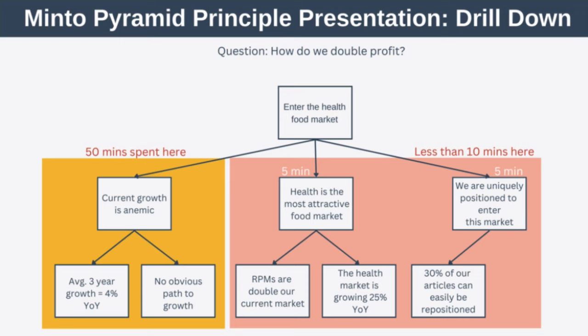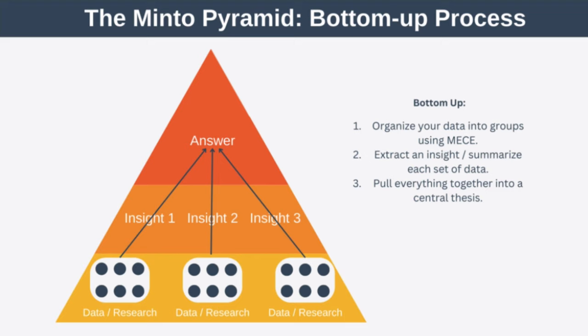So far we've been looking at the Minto Pyramid Principle as a top-down method of logically constructing and communicating an argument. But let's look at how you can use it from the bottom up to synthesize and make sense of data. To do this, you organize your data or research into distinct groups according to MECE, then extract insights from that data, and finally combine everything into a central thesis, insight, or takeaway.